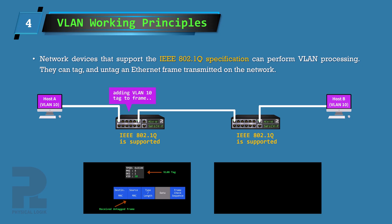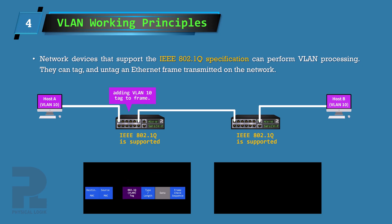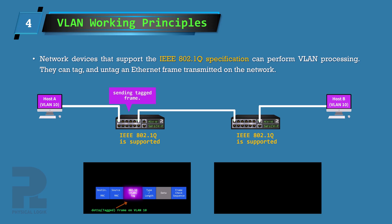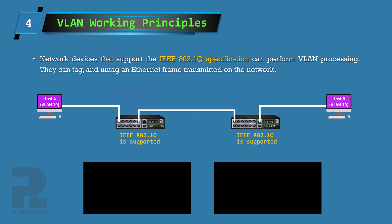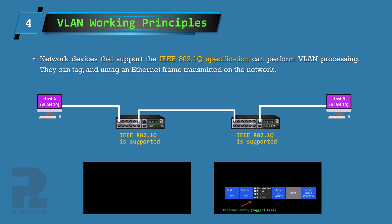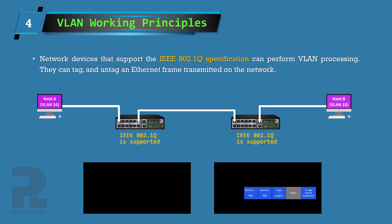This resulting frame is called a .1Q frame. The creation of .1Q frames enables switches on a LAN to confine the frame within the tagged VLAN and determine how to process the frames upon reception, which could be one of the following actions: forwarding the frame with the existing tag, removing the tag before forwarding, or completely discarding the frame.